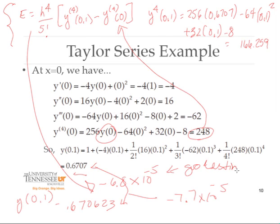One advantage of the Taylor series method is that as you take higher-order methods using more derivatives, the accuracy gets pretty good. The cost, however, is that you have to evaluate the function y many more times — you have to evaluate it for every one of those derivative approximations.